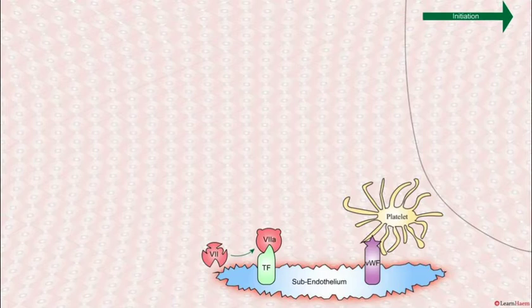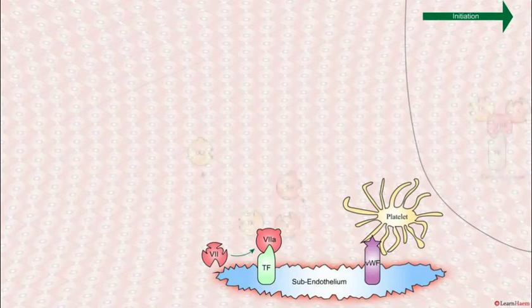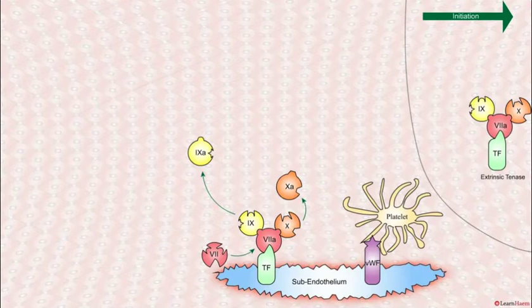in the in vitro model was the rate-limiting step. Here it is also rate-limiting. This conversion of factor 10 to 10a is what is going to ultimately lead to thrombin generation and formation of the fibrin-rich clot,